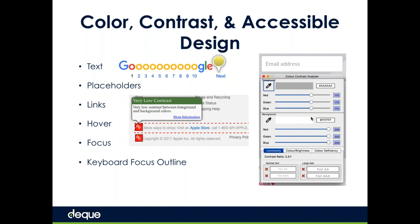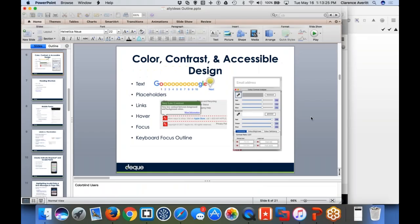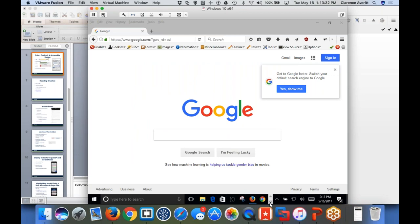I'm going to show you how the color contrast analyzer works. I'll be going back and forth between my mobile device, browsers, and screen readers. There are many things you can do on desktop to check if something is broken and figure out how to remediate it, but ultimately you really need to do testing on an actual mobile device — either Android or iOS. Let me open up the color contrast analyzer.